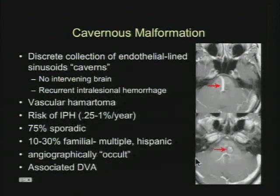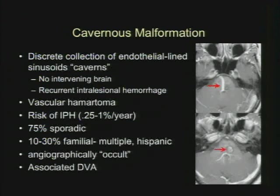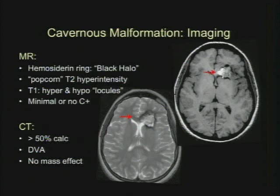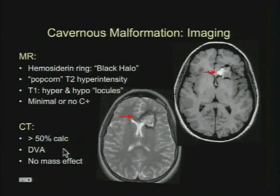Cavernous malformations are discrete collections of sinusoids or caverns — they're really vascular hematomas with no normal intervening brain tissue. Recurrent intralesional hemorrhage is responsible for the imaging characteristics. The risk of intraparenchymal hemorrhage varies depending on whether they're sporadic (75% of cases) or familial — familial cases have a higher risk for hemorrhage. An associated developmental venous anomaly can be a clue with acute hemorrhage. On MRI, you see a black halo or complete hemosiderin ring — one way to distinguish from hemorrhagic metastases, which often don't have a complete ring. You see popcorn-like T2 hyperintensity centrally, and on T1 hyper- and hypointense locules from repeated hemorrhage. Minimal or no enhancement. On CT, greater than 50% will calcify.